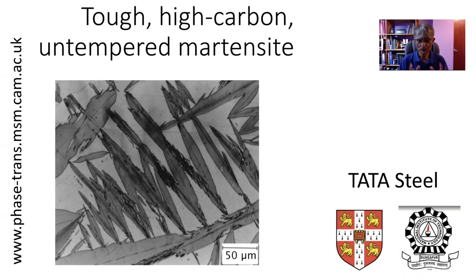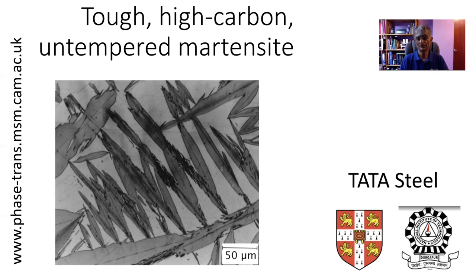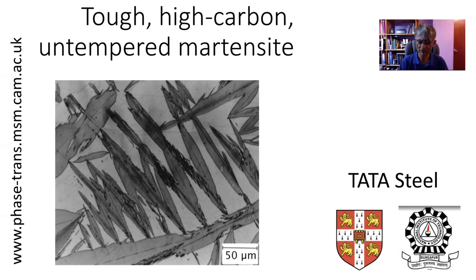It is common when we teach undergraduates about phase transformations in steels to explain that when we quench the steel to obtain martensite, the martensite is brittle. Therefore, it is necessary to temper it in order to obtain a good combination of strength and toughness, and of course the strength will decrease because of the tempering process.